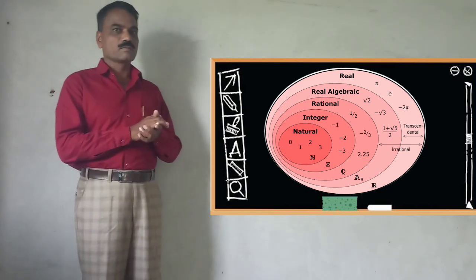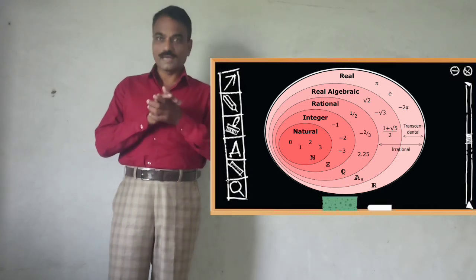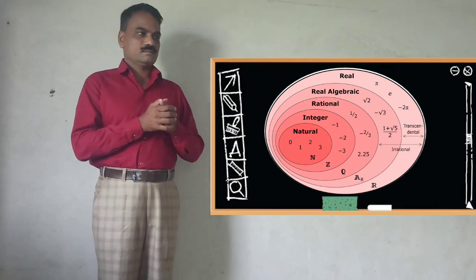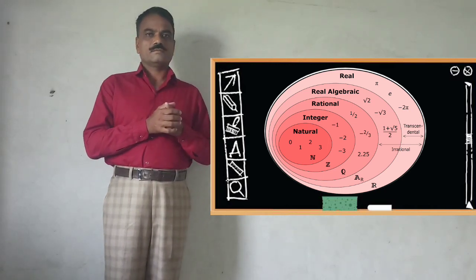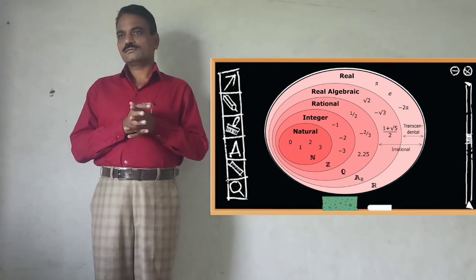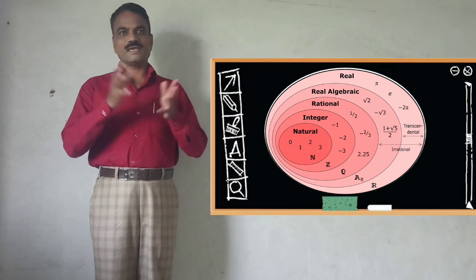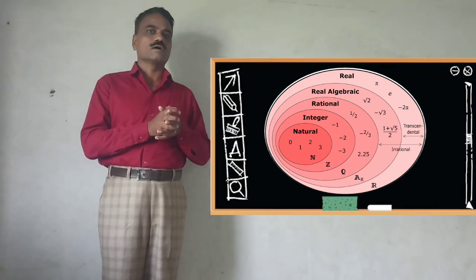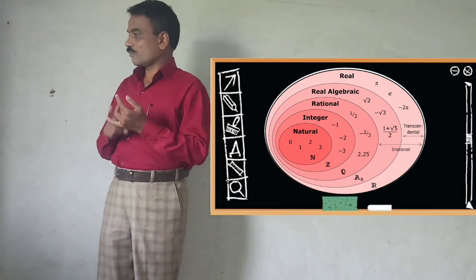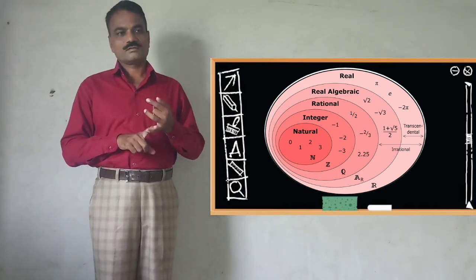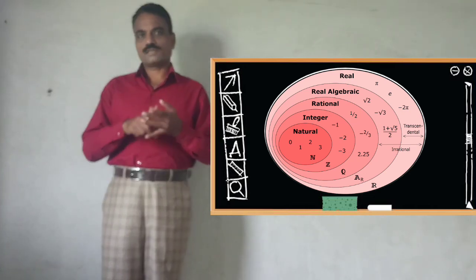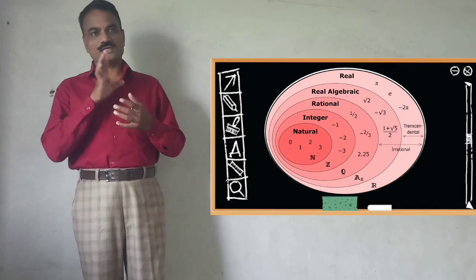The set of rational numbers and the set of irrational numbers. All these sets together make the set of real numbers. The set of real numbers includes the set of natural numbers, set of whole numbers, set of integers, set of rational numbers, and set of irrational numbers.